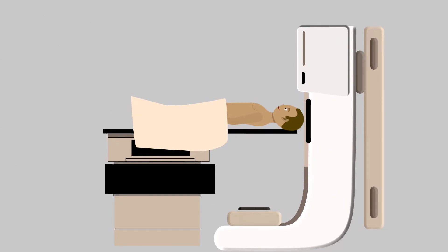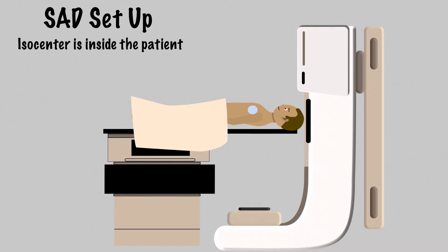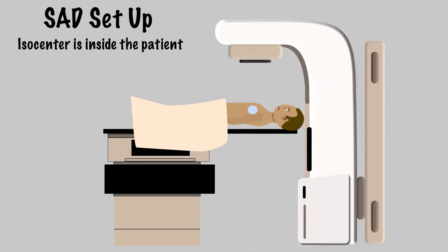SAD, a.k.a. isocentric setup, and TMR, or tissue maximum ratio. When treating a patient with more than a single beam, it makes sense to put the isocenter inside the patient. This allows the therapist to rotate the gantry and deliver multiple beams without moving the patient. In this situation, the patient is said to be treated with a source-to-axis distance, or SAD technique, also referred to as an isocentric technique.